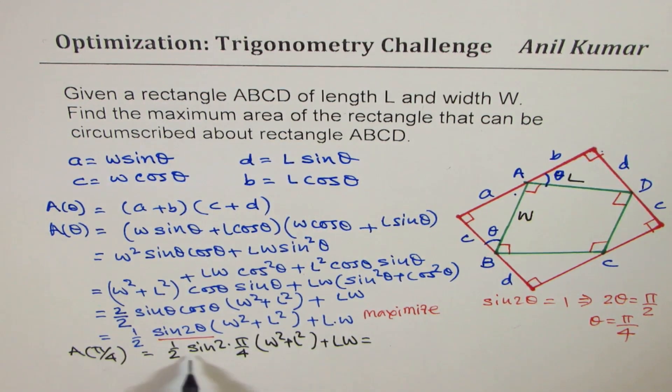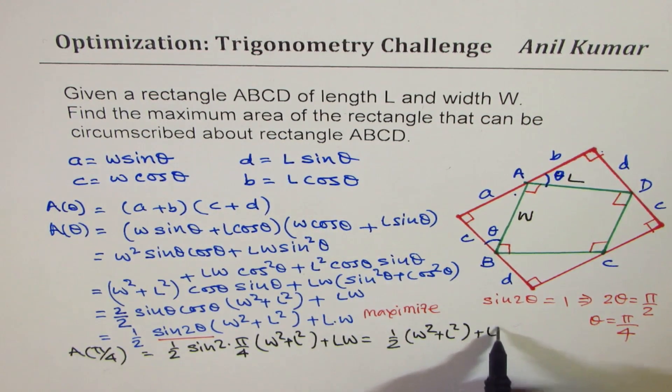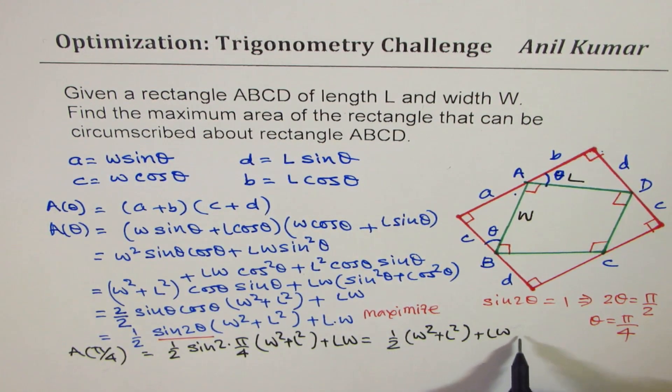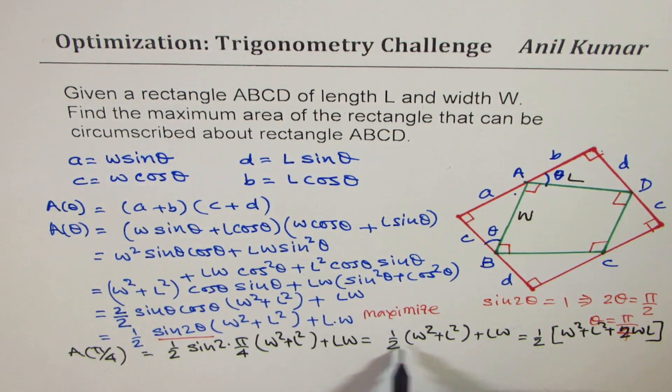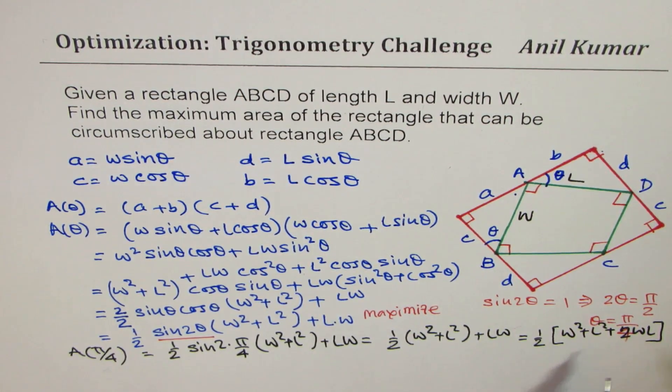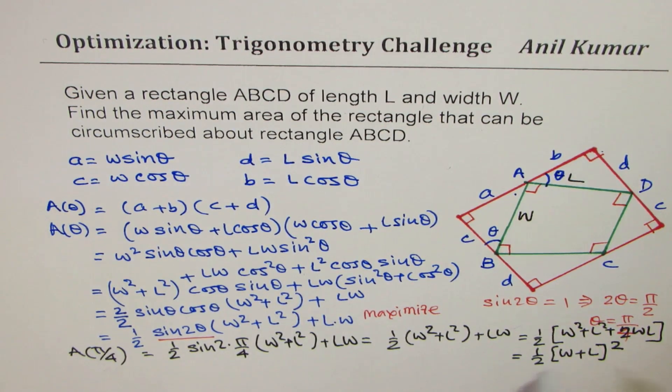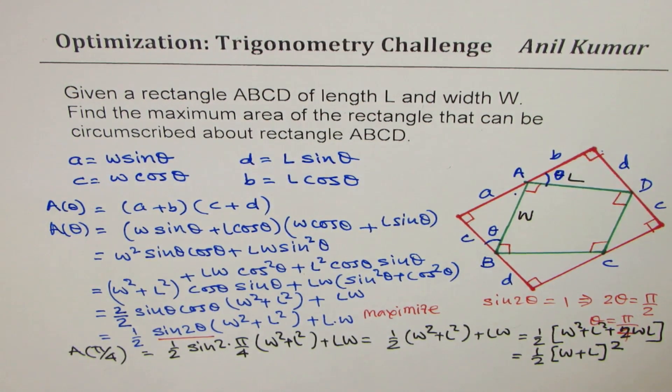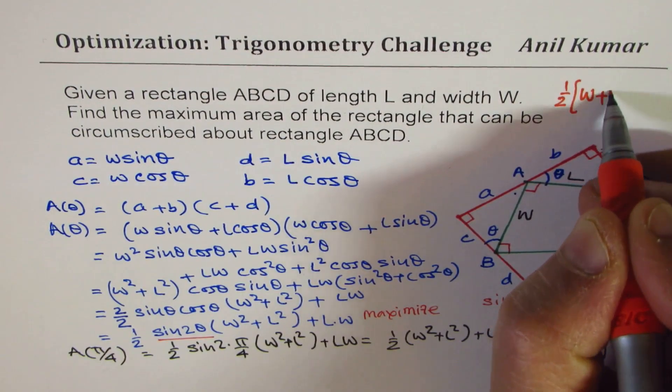Now, 2 times pi by 4 is pi by 2. Sine pi by 2 is 1. So what we get here is half W square plus L square plus LW, right? Now, we can take half common. So in the bracket, we get W square plus L square plus 2WL, right? Twice, because we have taken half common. And within this bracket, what do you see? We see that this is half of W plus L whole square. So that is the maximum area, right?